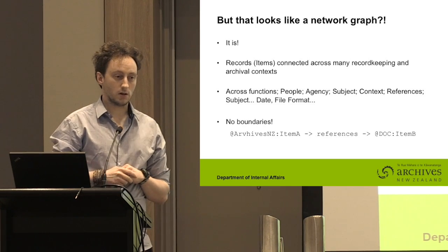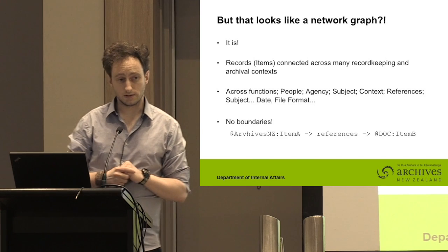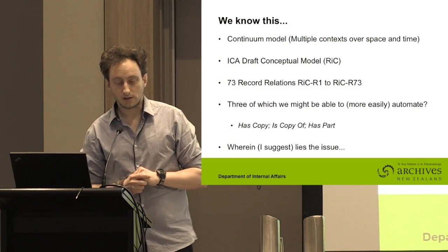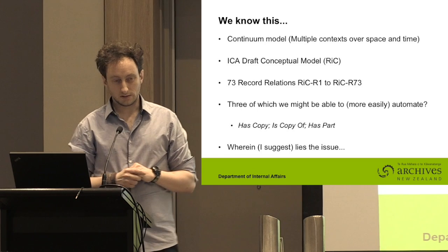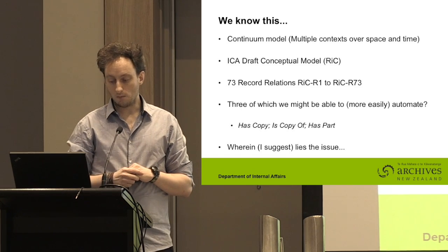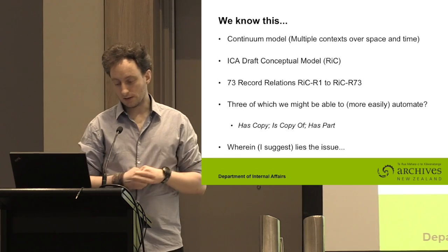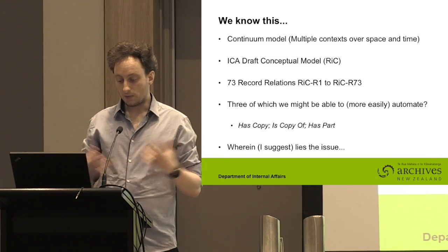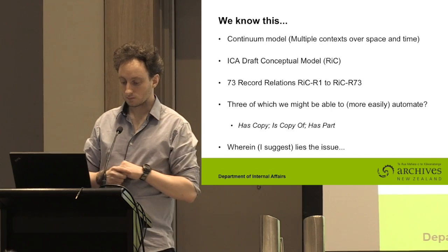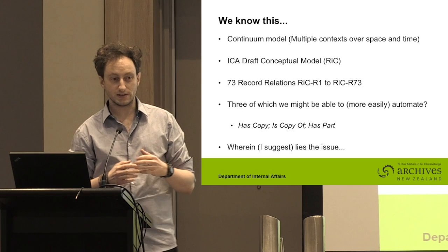There are no boundaries. So we can have a record at Archives New Zealand that references a record that may still not have been transferred to Archives New Zealand — that might sit at the Department of Conservation, for example. The continuum model talks about many contexts over space and time. And the ICA draft conceptual model, Records in Context, long after I started writing this paper, I saw in September from tweets at the ICA that they have 73 relationships you can connect between item to item or record to record.